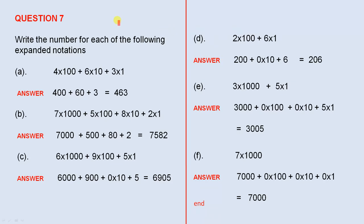Question 7. Write the number for each of the following expanded notations. Number a: 4 times 100, plus 6 times 10, plus 3 times 1. 4 times 100 is 400. 6 tens are 60. 3 ones are 3. When you add those together: 463.